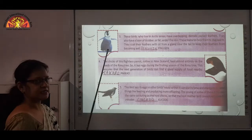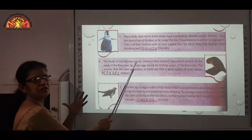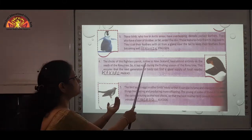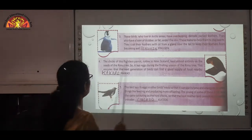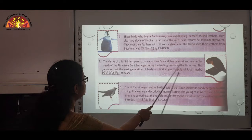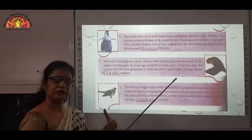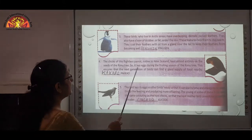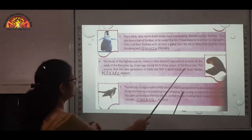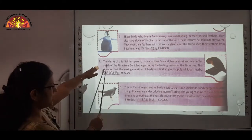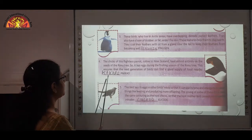Number 4: The chicks of this flightless parrot, native to New Zealand, feed almost entirely on the seeds of the rimu tree — a kind of coniferous, evergreen tree. It lays eggs during the fruiting season of the rimu tree. This ensures that the chicks can find a good supply of food nearby. That is Kakapo — K-A-K-A-K-A-P-O.